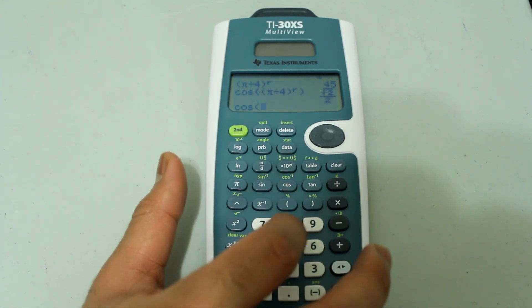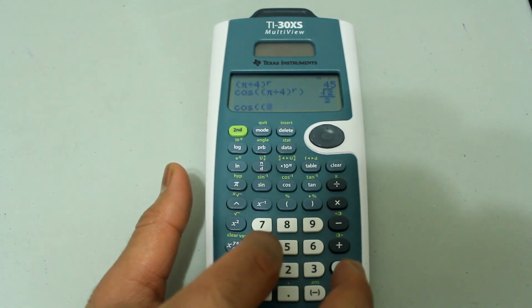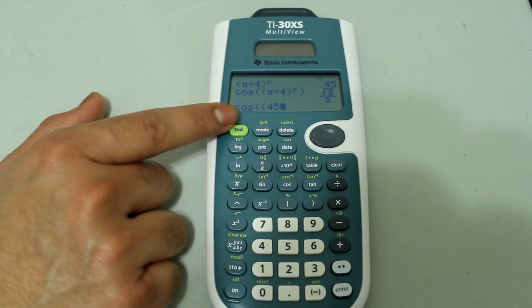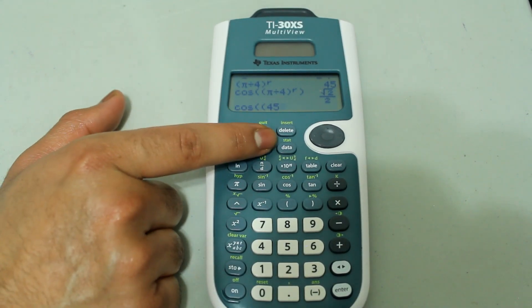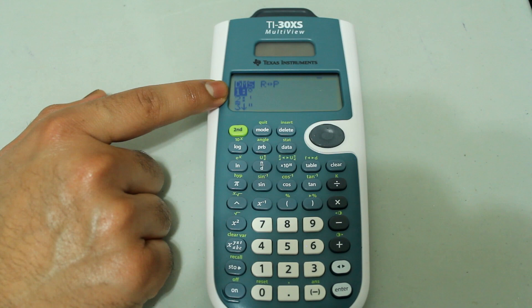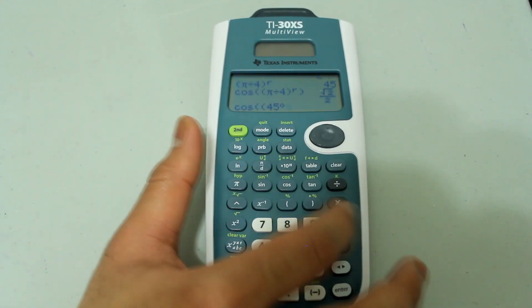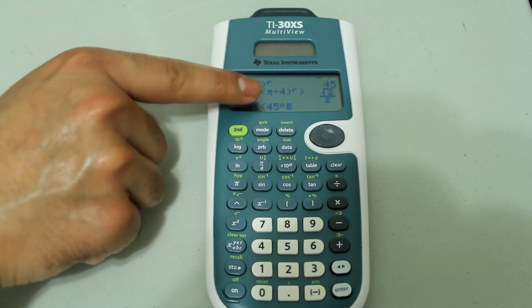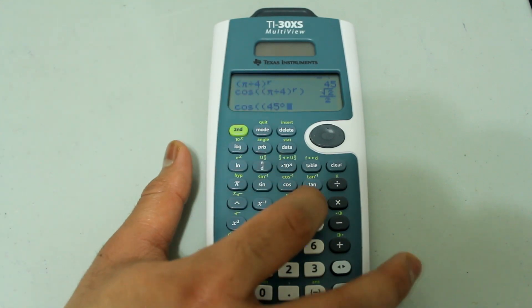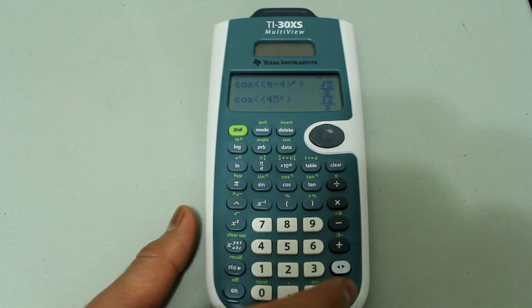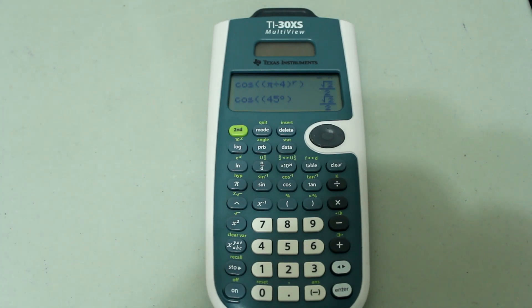Let's do cosine and open a parenthesis, 45, second, the PRB button. And we're going to tell the calculator that the entry is in degrees, so press enter. And it looks like this 45 degrees and then close the final parenthesis and press enter. And we get our answer.